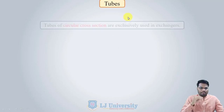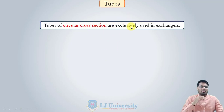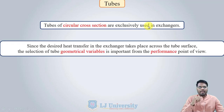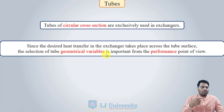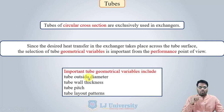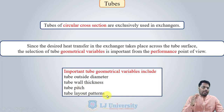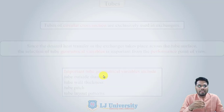The next important component for shell and tube heat exchangers is the tubes, which are generally of circular cross section. The desired heat transfer takes place across the surface of the tube, so selection of tube geometrical variables is important for performance. Key geometric variables include outside diameter, wall thickness, tube pitch, and tube layout patterns, which will be covered in upcoming slides.